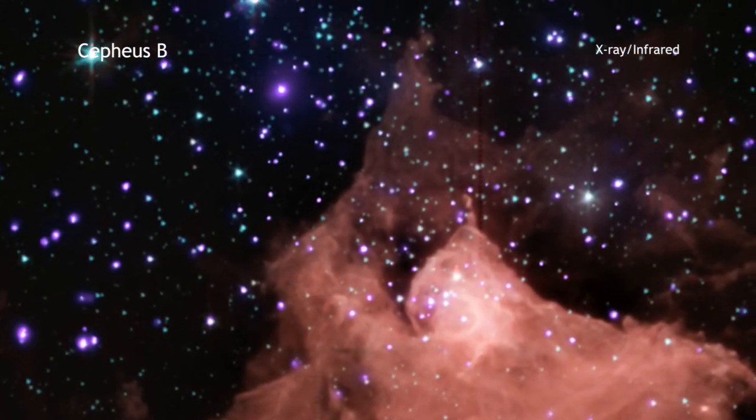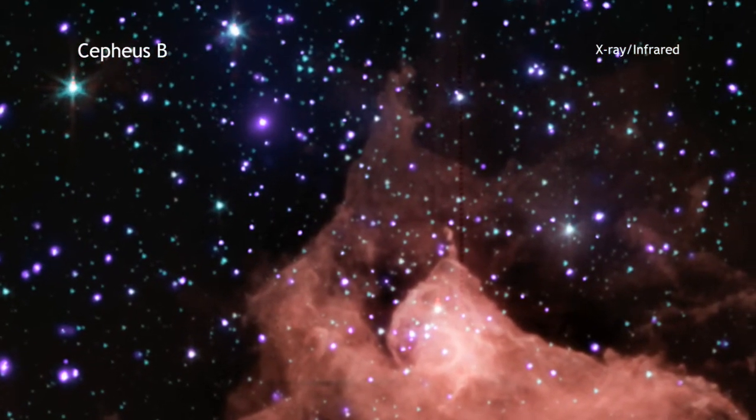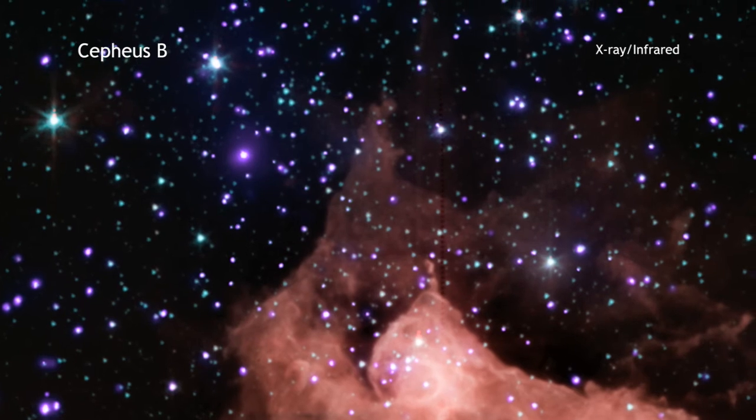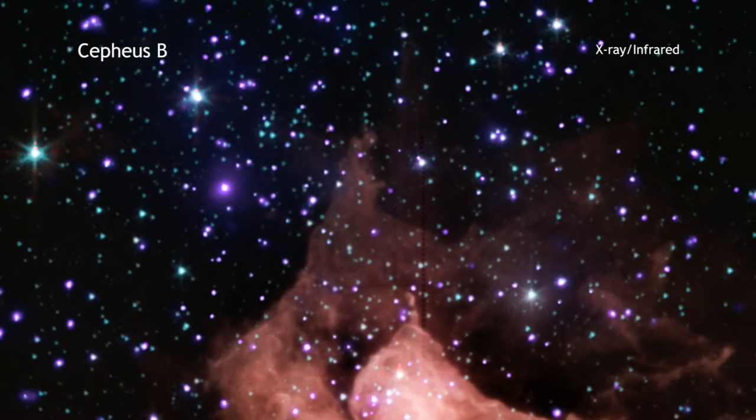Now, research on an object known as Cepheus B, a cloud of hydrogen about 2400 light-years from Earth, helps answer that question.